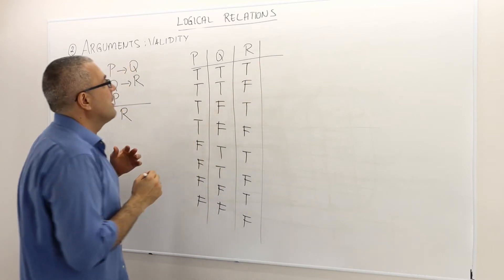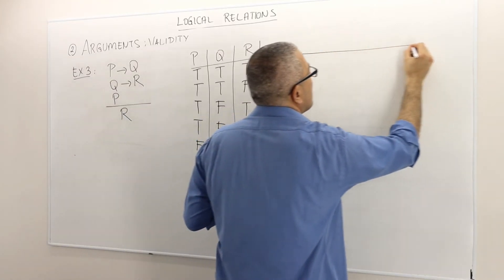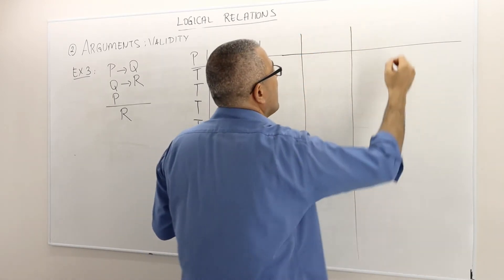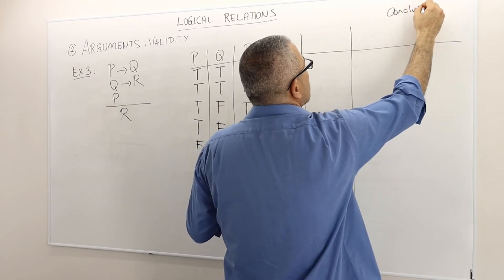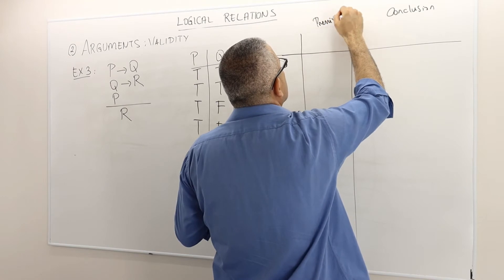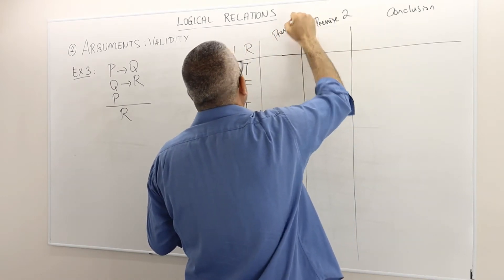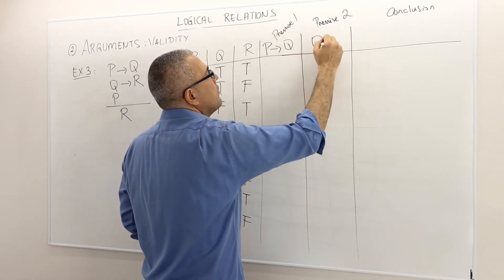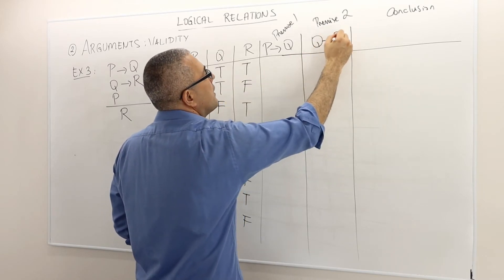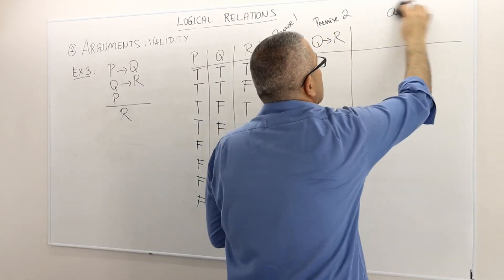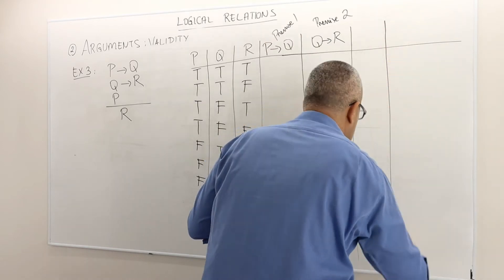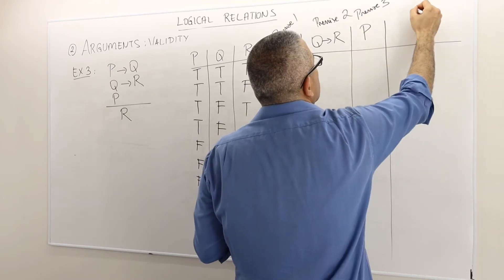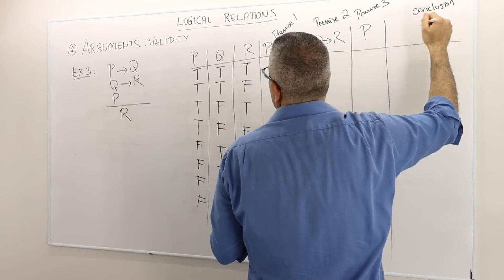Now it's time to write the premises. I have premise number one, P implies Q. Premise number two is Q implies R. There's also premise number three, which is P only. And then finally, the conclusion, which is R.